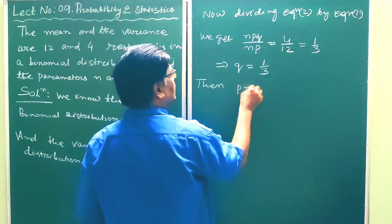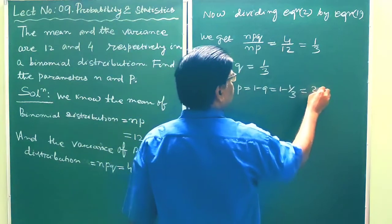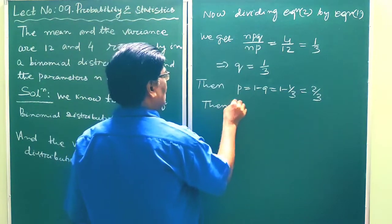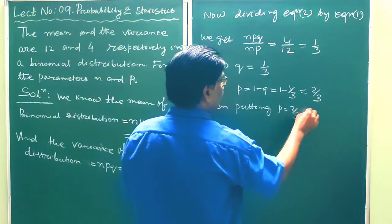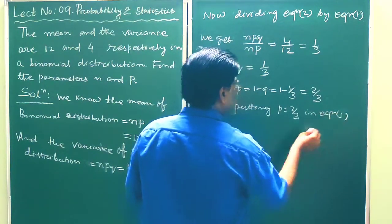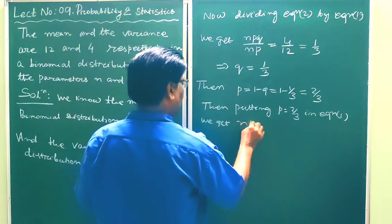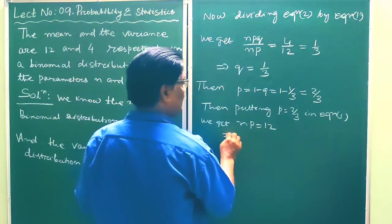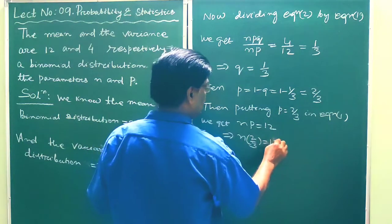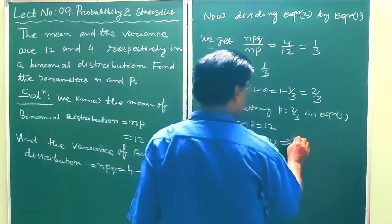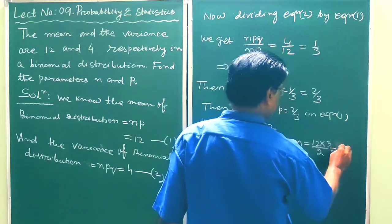So q is equal to 1 by 3, and therefore p is equal to 1 minus q, which gives p equal to 2 by 3. Then putting p equal to 2 by 3 in equation 1, we get n times 2 by 3 is equal to 12. This implies n is equal to 12 times 3 by 2, which is equal to 18.